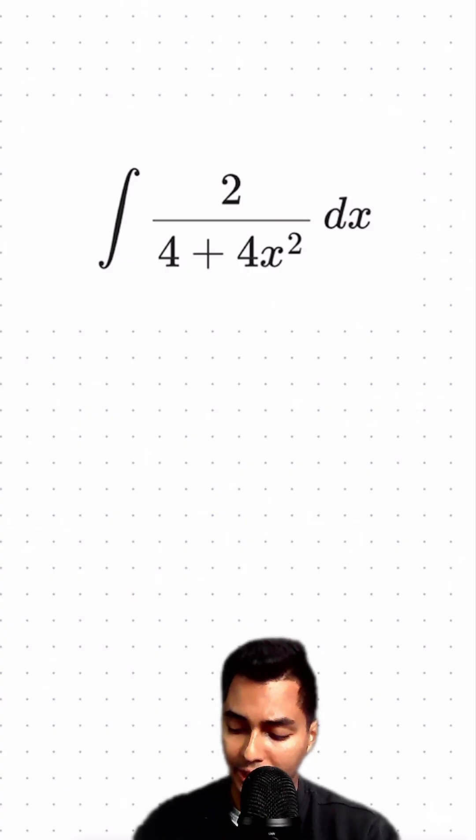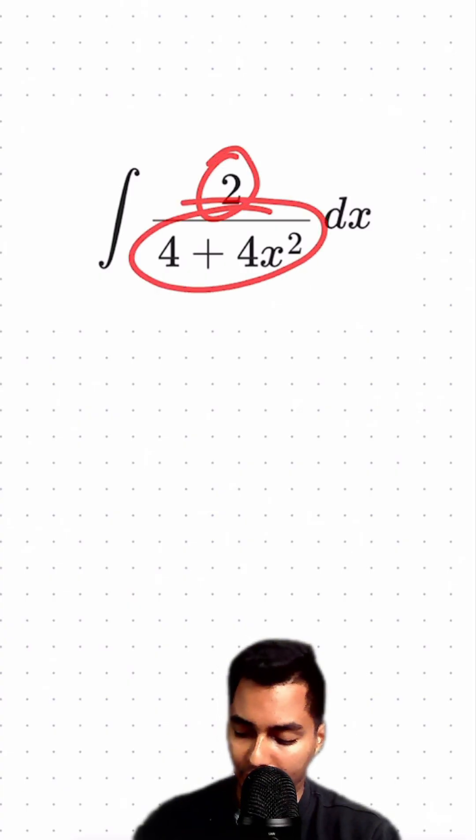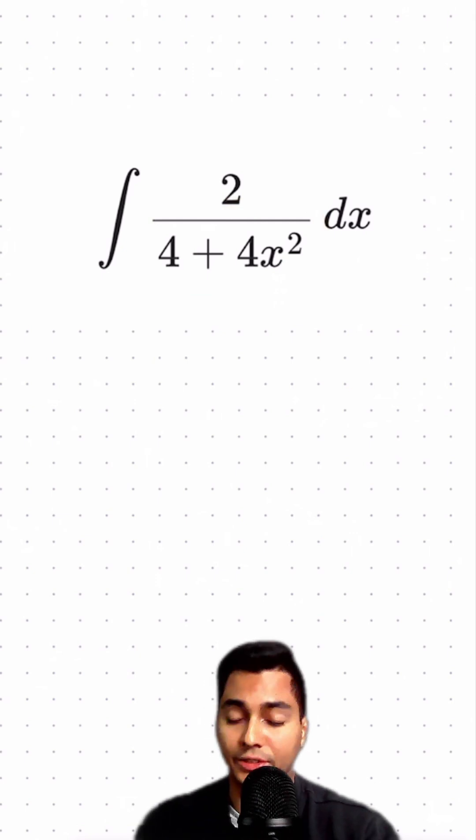Can you solve this trig integral? We have the integral of 2 over 4 plus 4x squared dx. This is going to be another trig substitution.